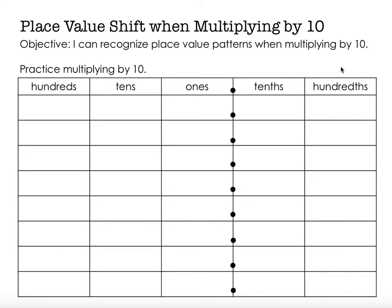Hi, this is Mrs. Nelson. We're going to continue our place value understanding by considering place value shifts when multiplying by 10. Our objective says: I can recognize place value patterns when multiplying by 10. So we're going to practice multiplying by 10.